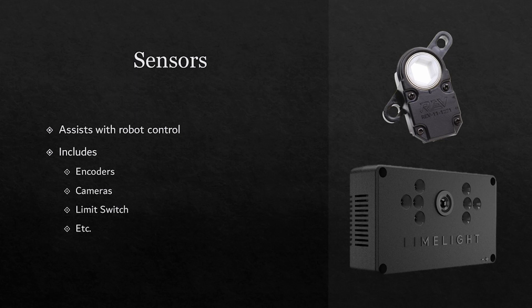Cameras can also be used for vision tracking and sensing items, such as helping to aim correctly when shooting a game element, or to help the robot make a decision of which element it needs to pick up. The camera shown here is a Limelight that is used frequently for vision tracking and alignment in FRC.